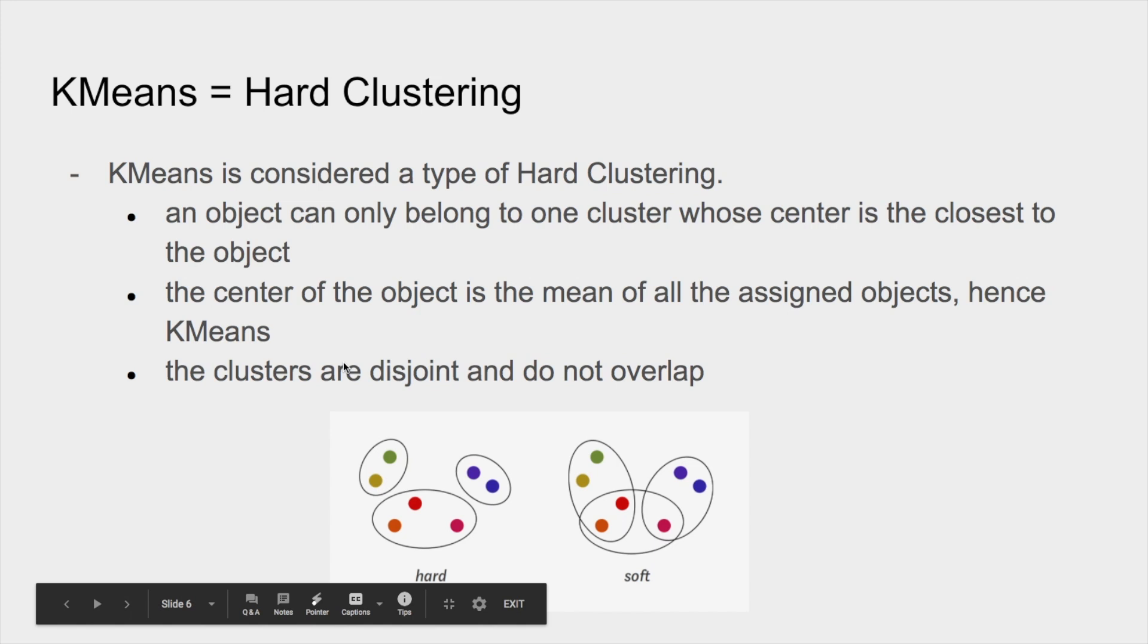Like I mentioned before, the center of the object is the mean of the assigned objects. So the centroid right here would be the mean of these two, the centroid in this one would be the mean right in here somewhere. And they don't overlap. The clusters don't overlap - that's why they're called hard clusters, because there's a very hard and definite line between the clusters.